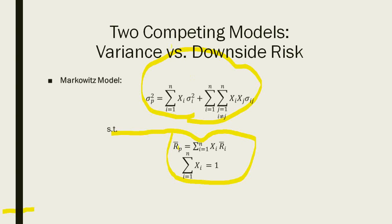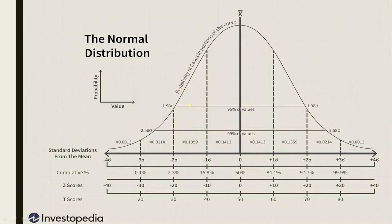In the Markowitz model, the left-hand side of the formula represents the diversifiable risk and the right portion represents the non-diversifiable risk — we proved this in class. The basic premise of Markowitz is that stock returns are normally distributed.